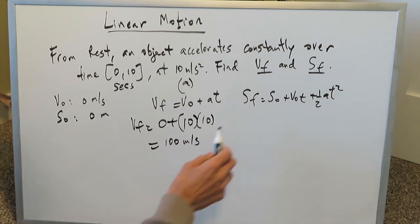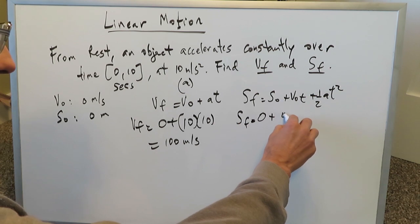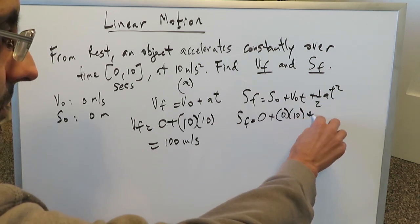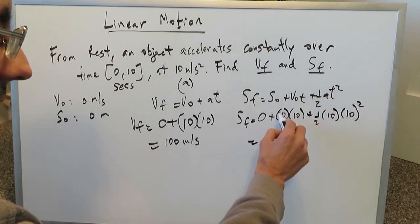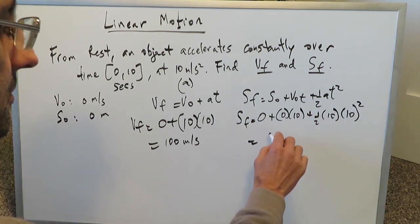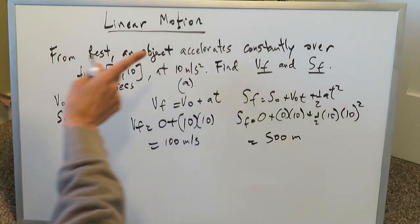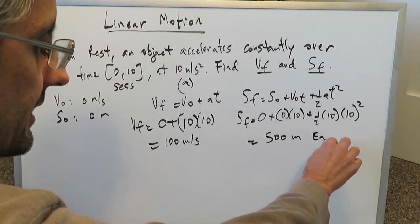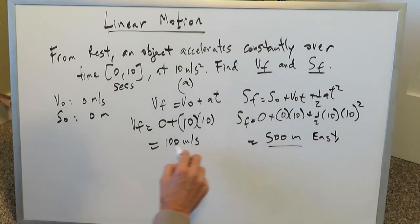For the final position: initial position is 0, initial velocity times time is 0 times 10, plus half times 10 times 10 squared. The zeros drop out, leaving us 10 squared times 10 divided by 2, giving a final position of 500 meters. If the object accelerated towards the east, we can say 500 meters east from its initial position.